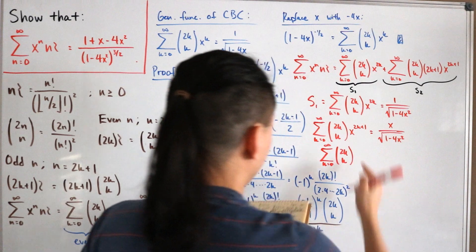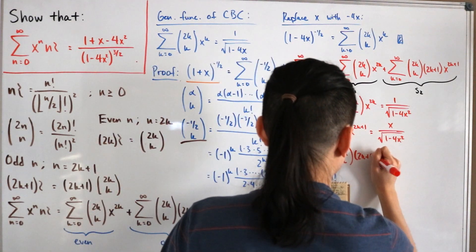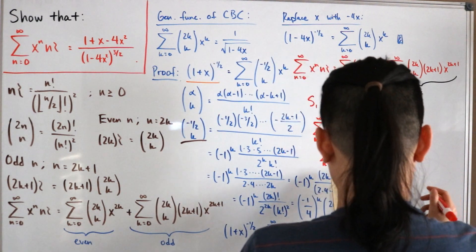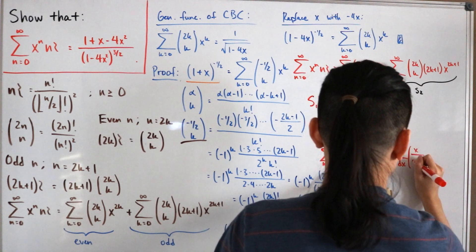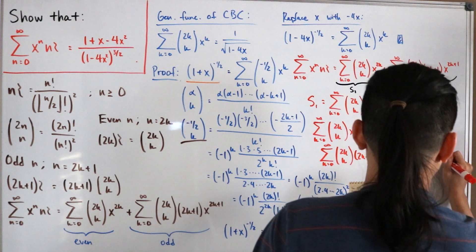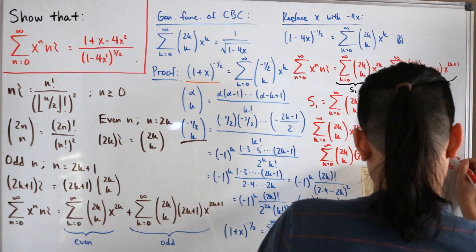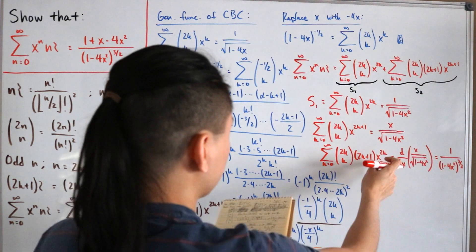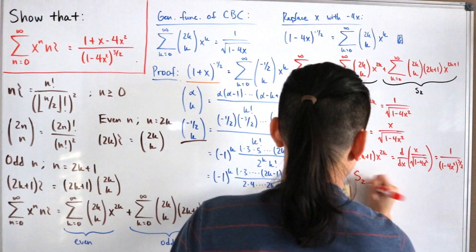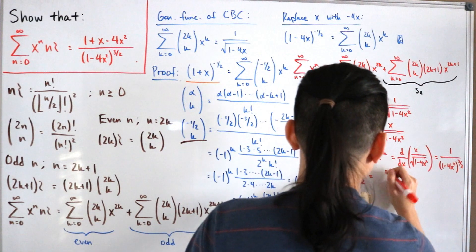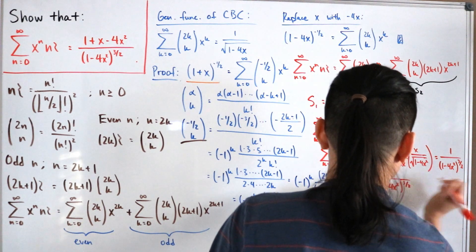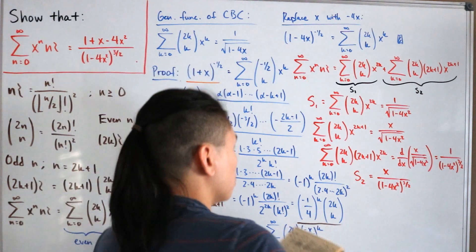Differentiating the left side by the power rule gives Σ C(2k,k) · (2k+1) · x^(2k). Taking the derivative of x/√(1-4x²) via the quotient rule yields 1/(1-4x²)^(3/2). Then multiplying both sides by x gives S2 = x / (1 - 4x²)^(3/2).